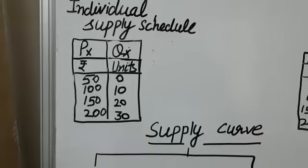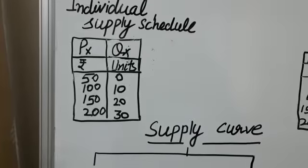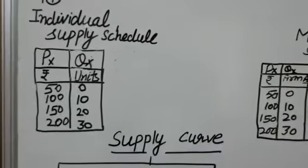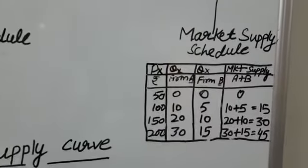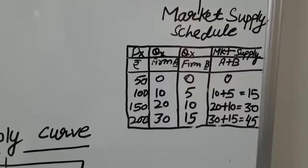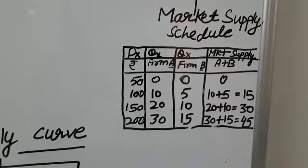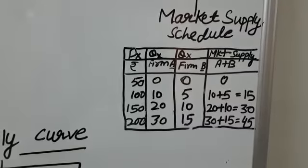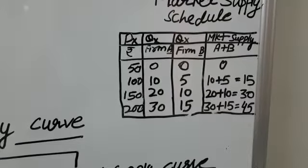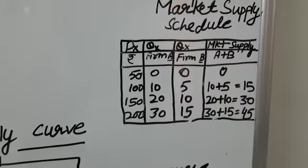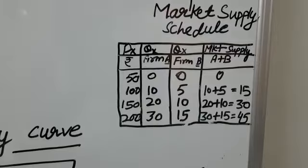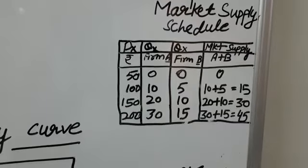It is clearly indicating a positive relationship between price and quantity supplied of a commodity. Now, market supply schedule. Market supply schedule refers to the supply schedule of all the firms or producers in the market producing a particular commodity. The sum total of firms producing a particular commodity is called an industry. Thus, market supply schedule refers to the supply schedule of the industry as a whole.